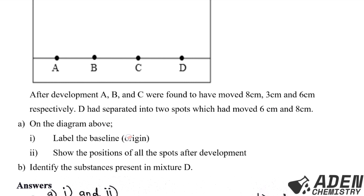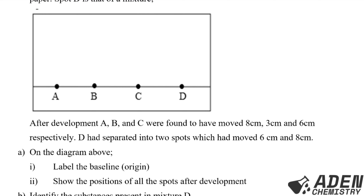Part A(i): label the baseline on the diagram — the other name for the baseline is the origin. So on the chromatography paper, this is the baseline or origin. Part A(ii): show the position of all the spots after development.